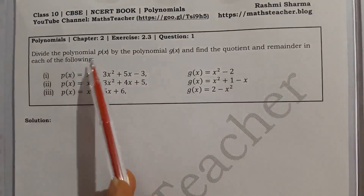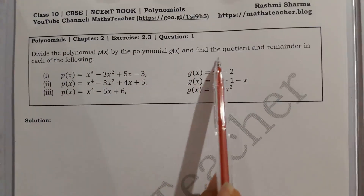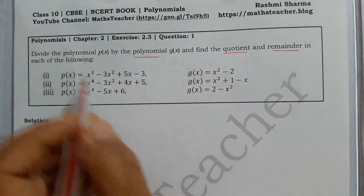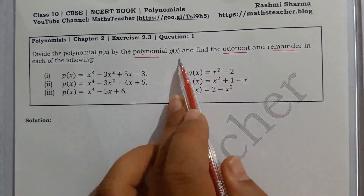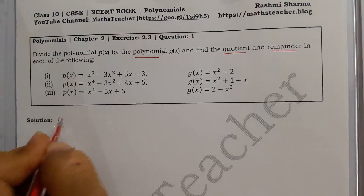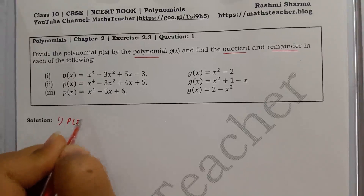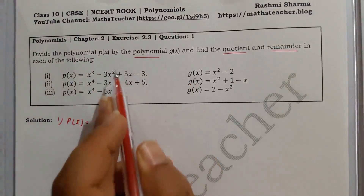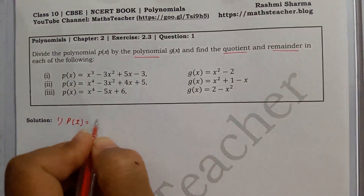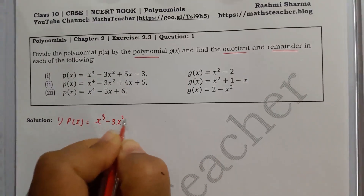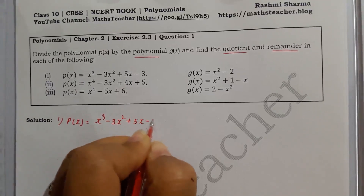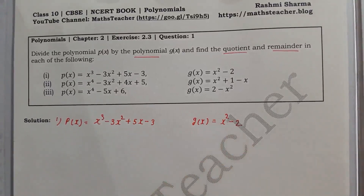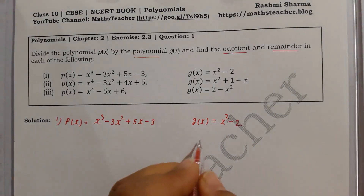The question is: divide the polynomial p(x) by the polynomial g(x) and find the quotient and remainder. In the first part, p(x) is x³ minus 3x² plus 5x minus 3, and g(x) is x² minus 2. We have to divide p(x) by g(x) and find q(x) and r(x).